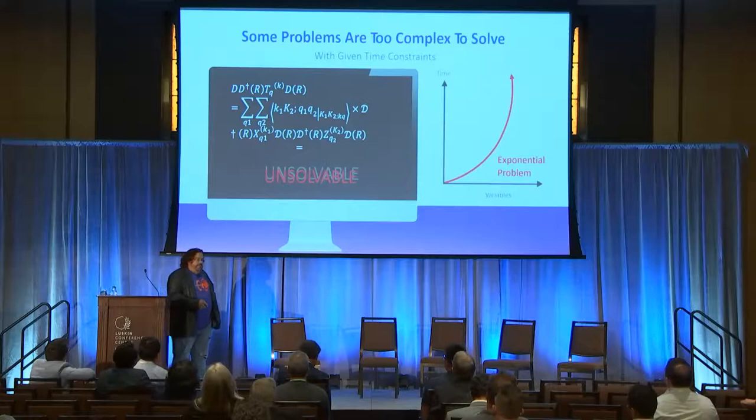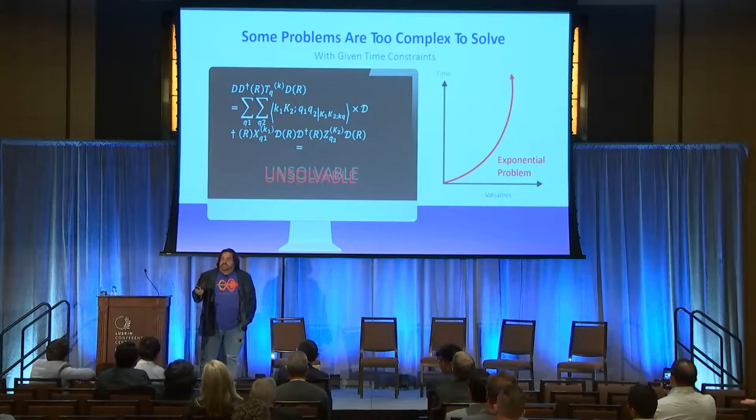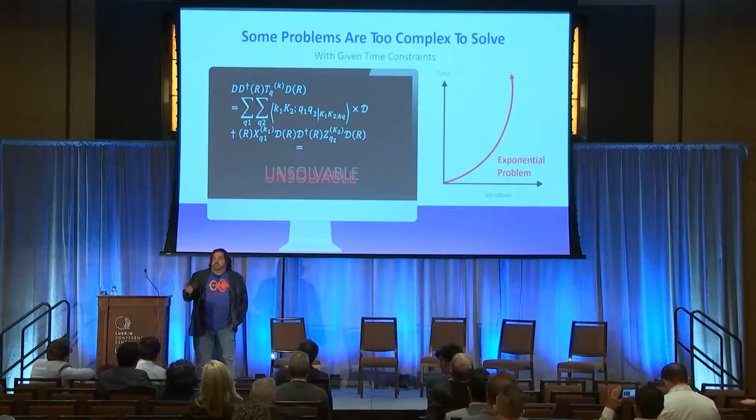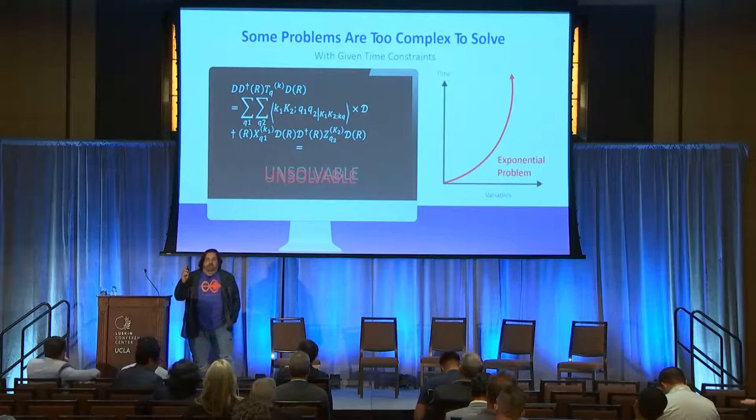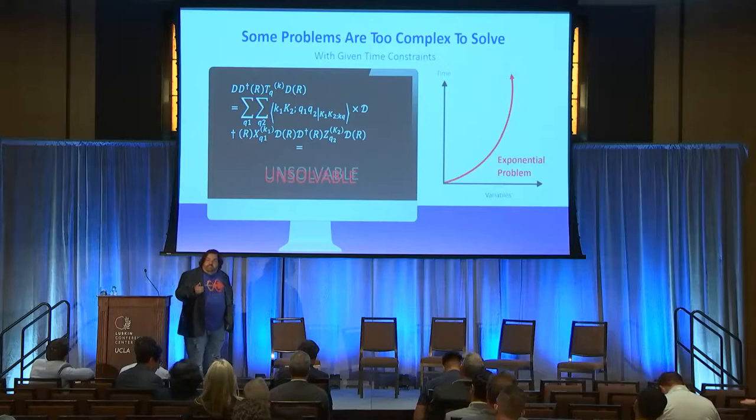The problem is that with the explosion of big data, these problems — the number of variables and constraints — have grown to the point that they're taxing computing resources. Companies are having to put more and more servers in their data centers. They're adding GPUs and very costly things in order to get these problems done in the time frame that they need.